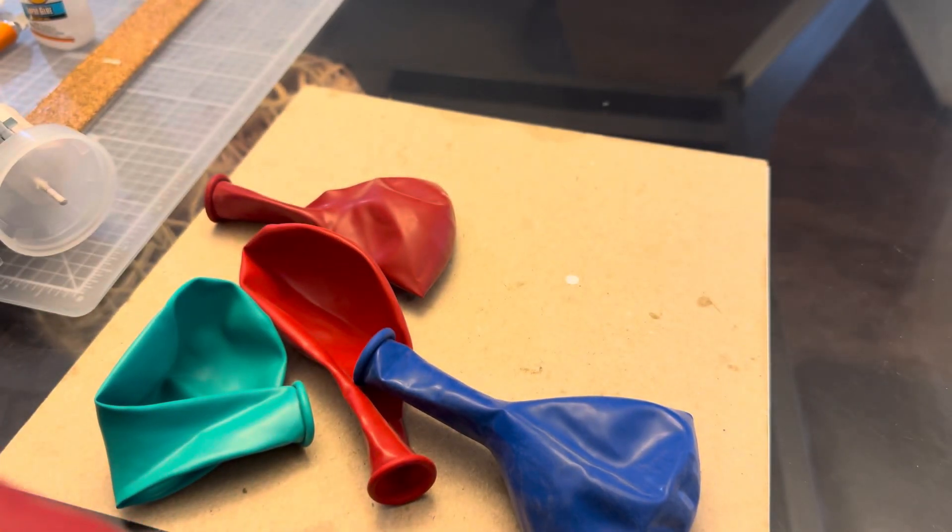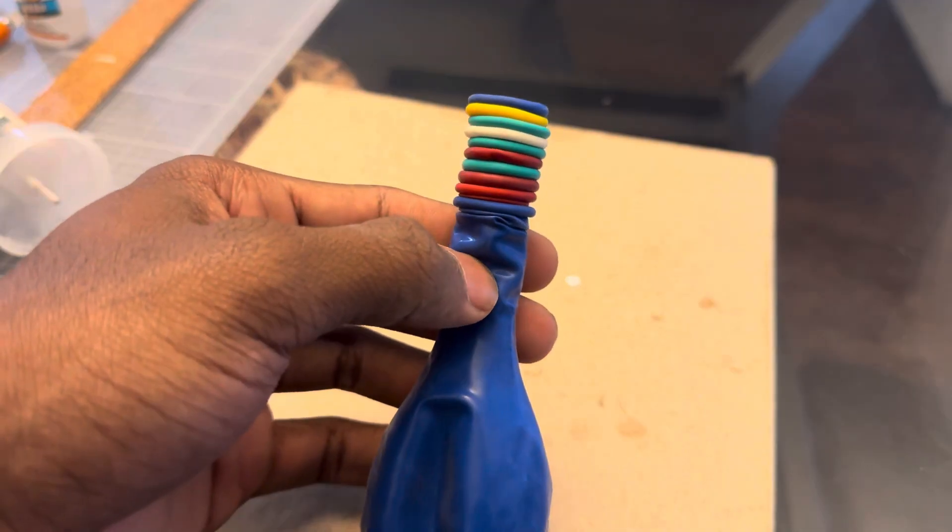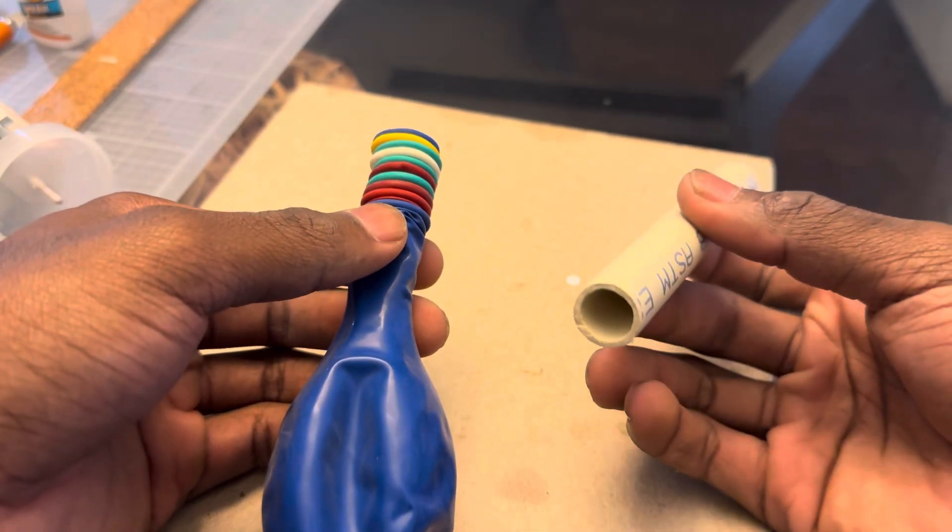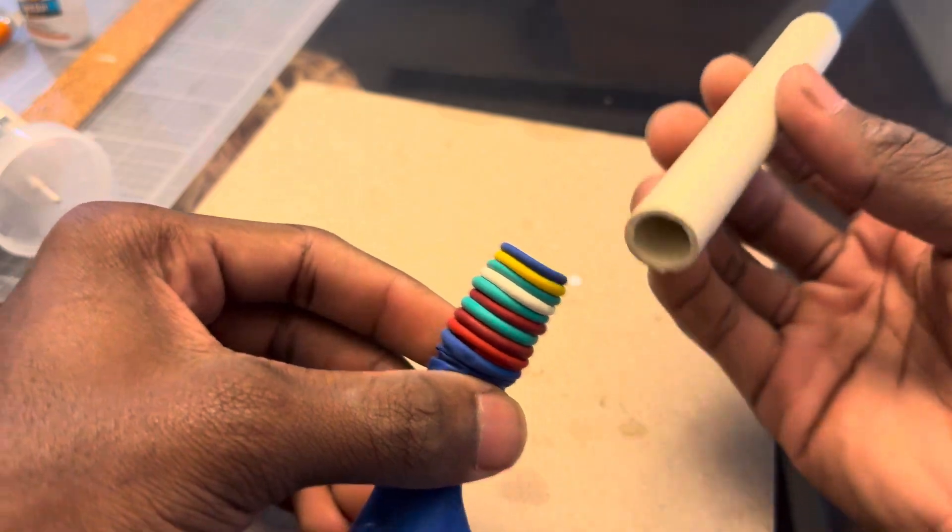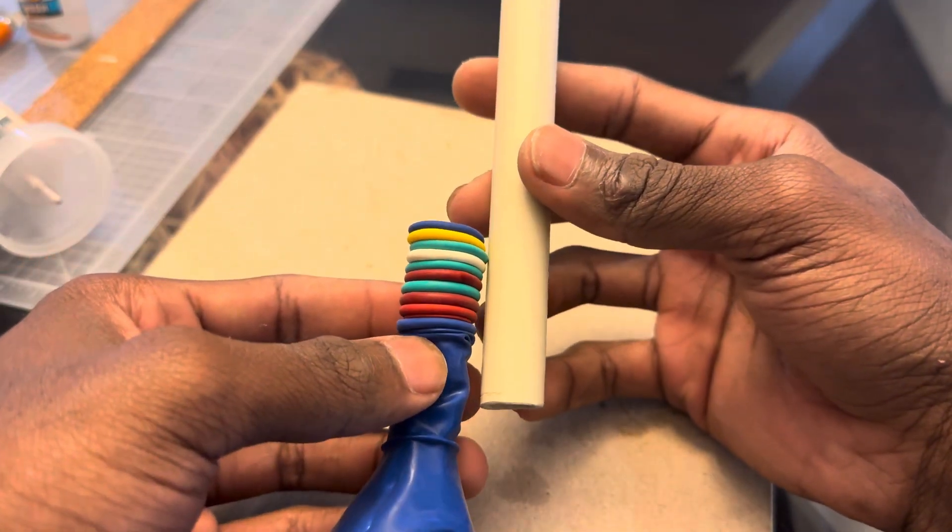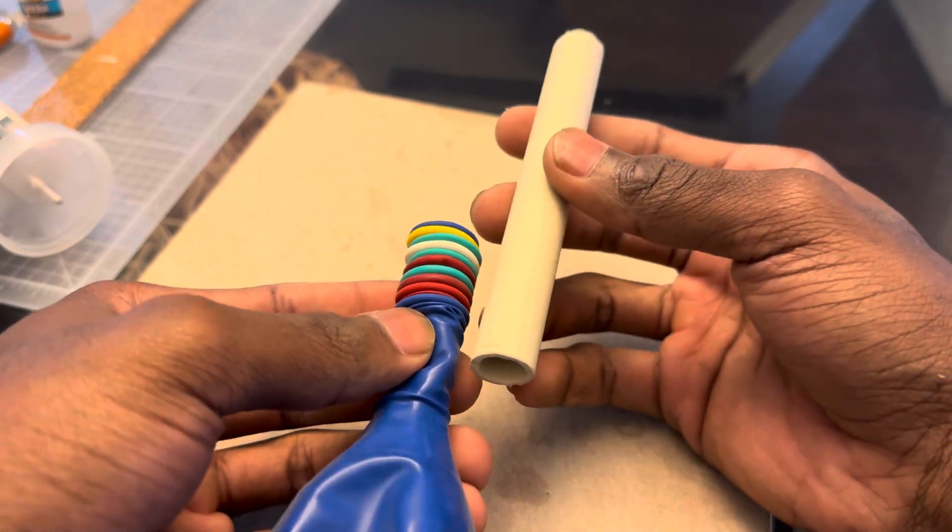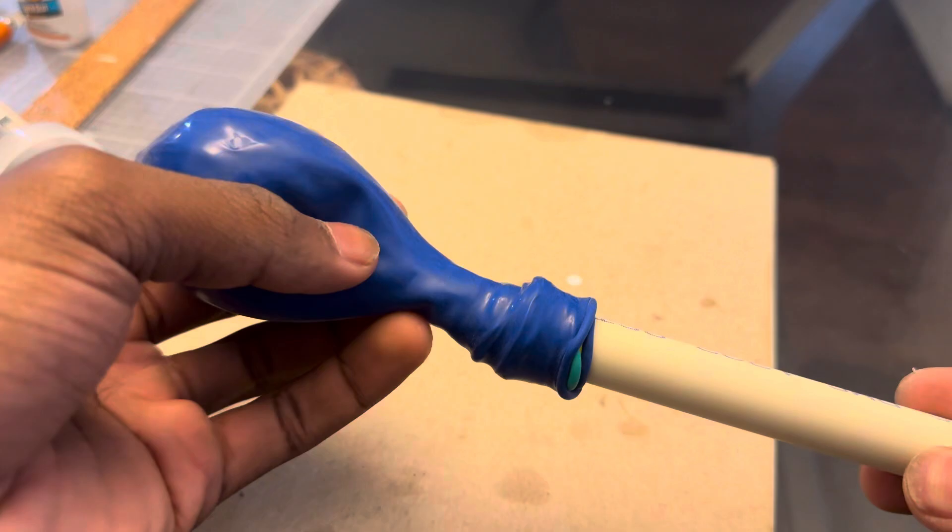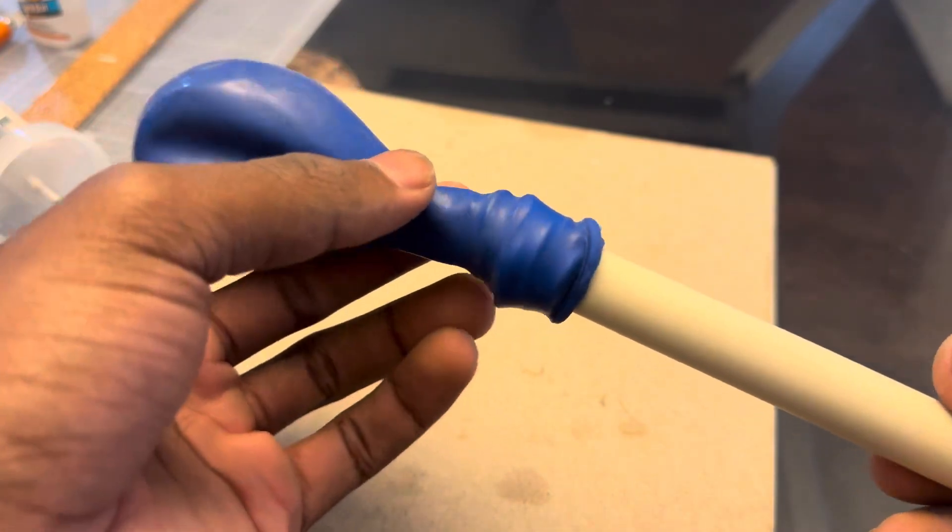All right, so now I've got ten balloons stacked. I gotta figure out a way to get this at least about right there. I'll be back. All right, we got it on there somehow. It's kind of messy.